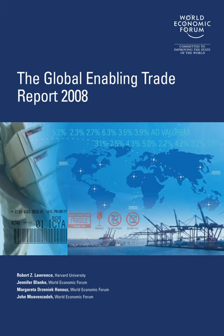The Global Enabling Trade Report was first published in 2008 by the World Economic Forum. The 2008 report covers 118 major and emerging economies.